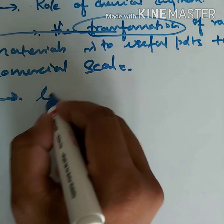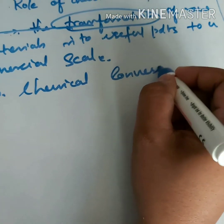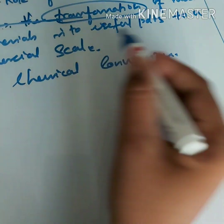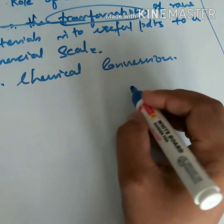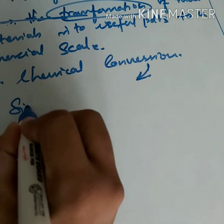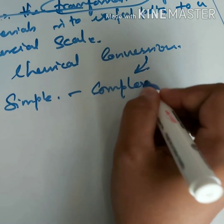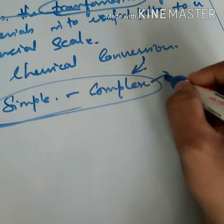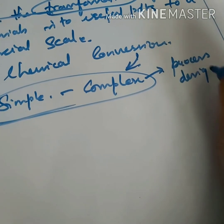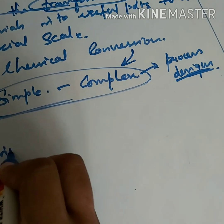This transformation can be done by using chemical conversions. There are many chemical conversion techniques, and by using these chemical conversions we transform raw materials into useful products. In chemical processes, the conversions may be either simple or complex, and this depends on the process design.